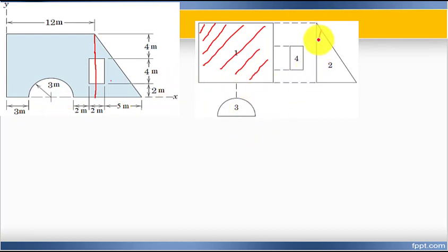Shape number four is hollow and it is a rectangle.